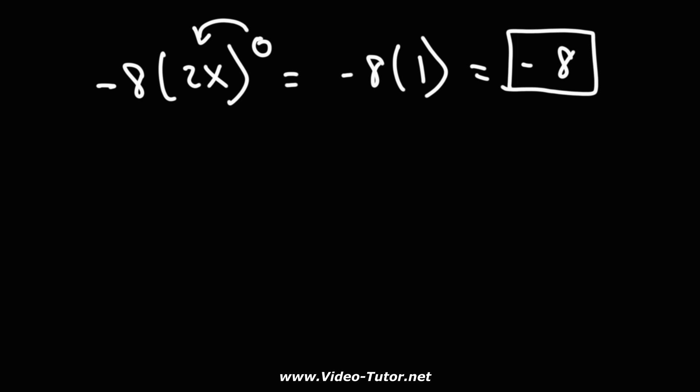So when simplifying expressions with zero exponents, it's important to identify what the zero applies to and what it does not apply to in order to get the answer.